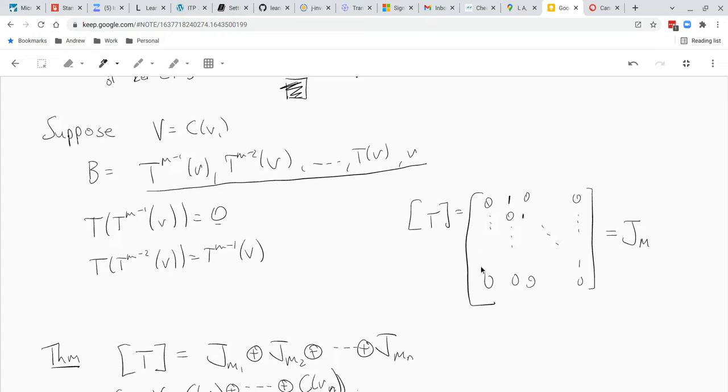Okay so my first column of the matrix of T is all zeros. What about the next column? That's T of T to the M minus 2 of V. Well T of T to the M minus 2 is just T to the M minus 1 of V. That's the first vector in my basis. So that means my second column is a 1 followed by all zeros.